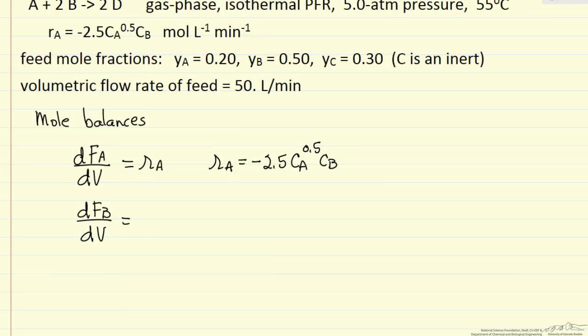A similar equation in terms of the molar flow rate of B. The rate of reaction of B is twice the rate of reaction of A for the stoichiometry. And then the product, the mole balance for D, this is minus 2 times R sub A, so the total term is positive, we're forming D.